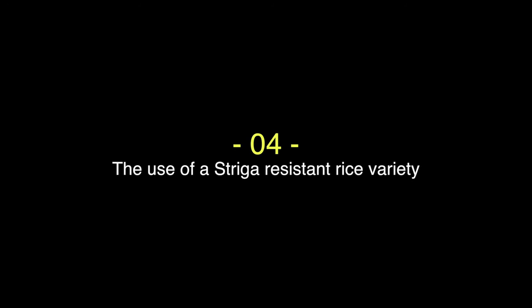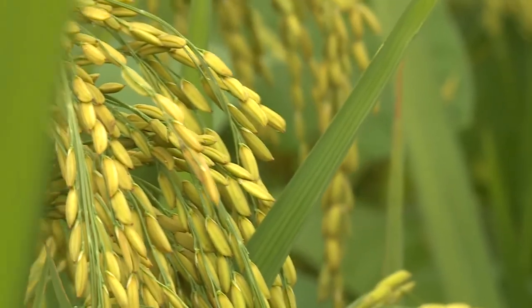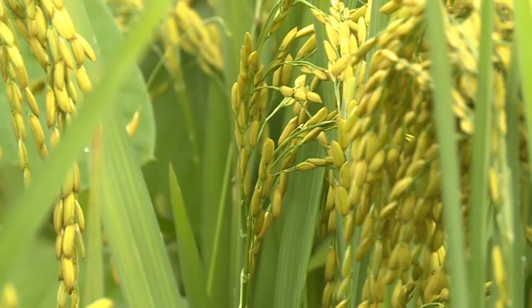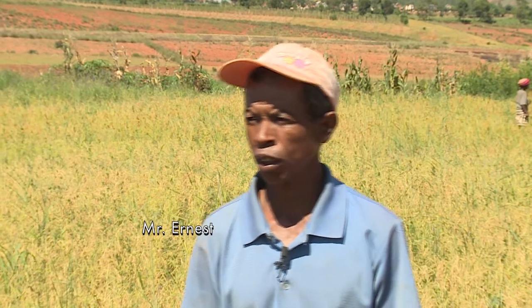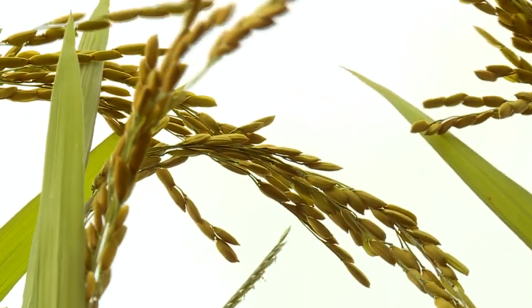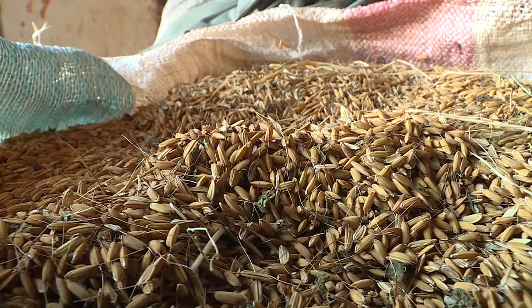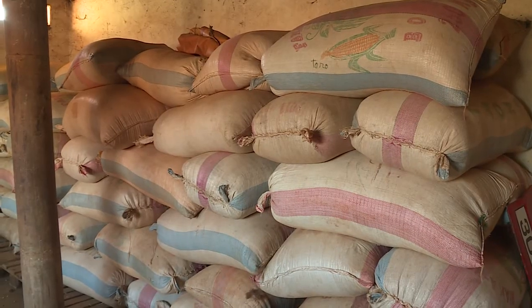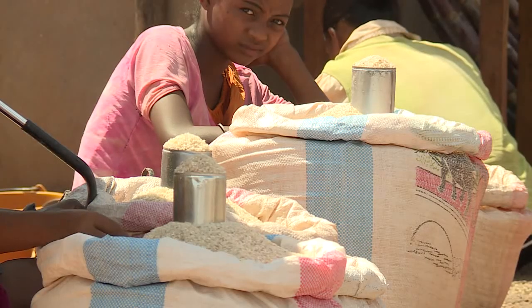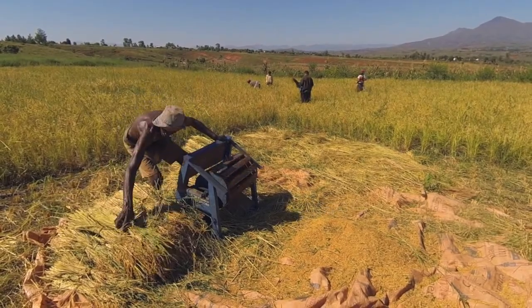The fourth and final principle is the use of a Striga-resistant rice variety. Ernest explains: 'In addition to direct sowing, no tillage and the use of vegetative soil cover, I use improved rice varieties because they are resistant to diseases, weeds and insects. They also grow well. I use varieties such as Nerika. Those varieties are resistant to Striga and are widely available.' Indeed, some varieties are more resistant to Striga. These resistant varieties include Nerika 2, 3, 4, 8 and 10.